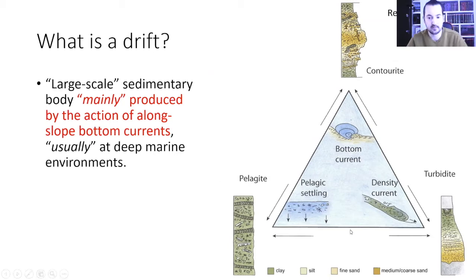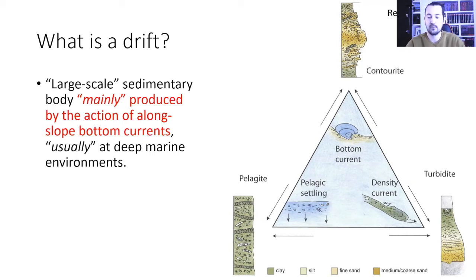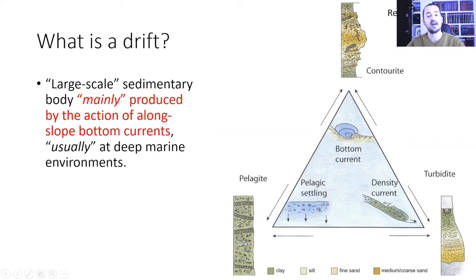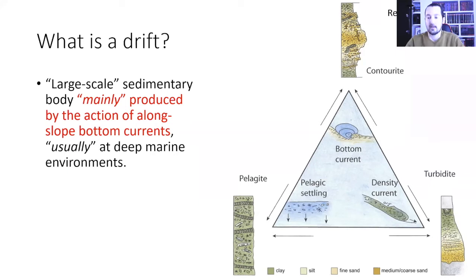As seen in this figure again from Rebesco et al., drifts or contourites occur in marine environments, but there are other phenomena controlling sedimentation in the marine environment. One type is density currents occurring at shelf margins and producing turbidites; the other is the pelagic settling of particles suspended in the water column occurring in every basin.